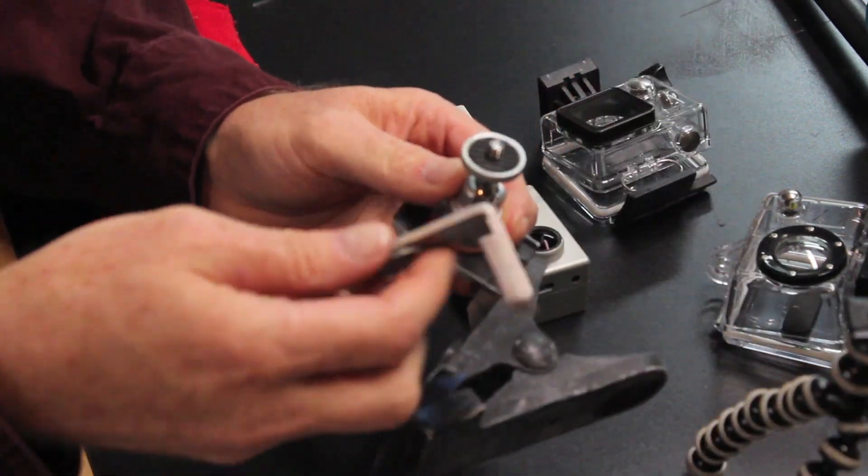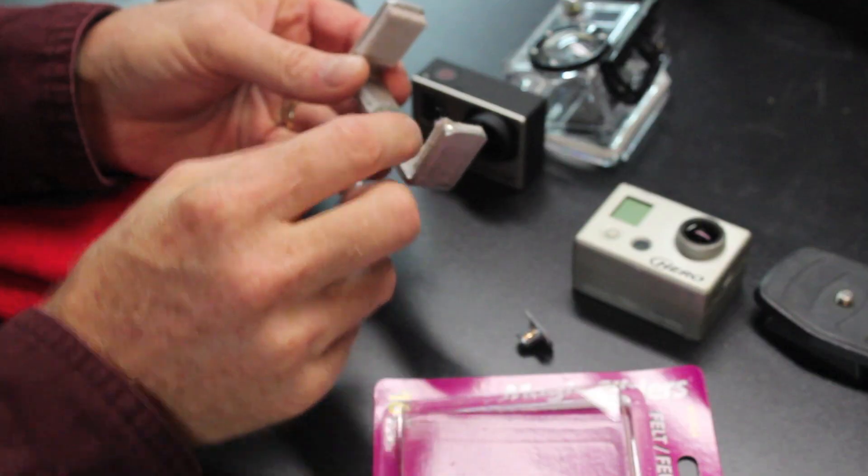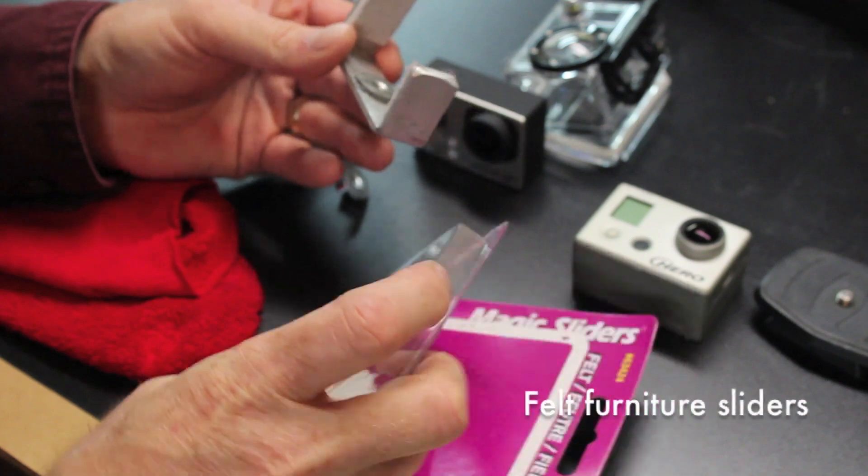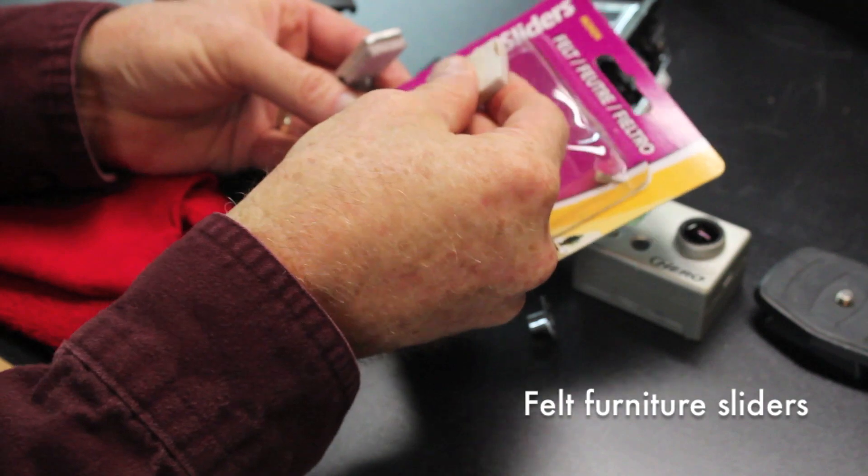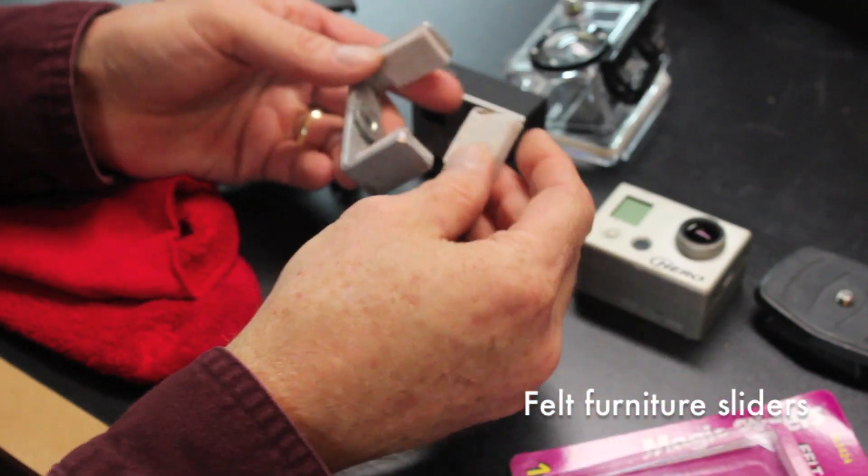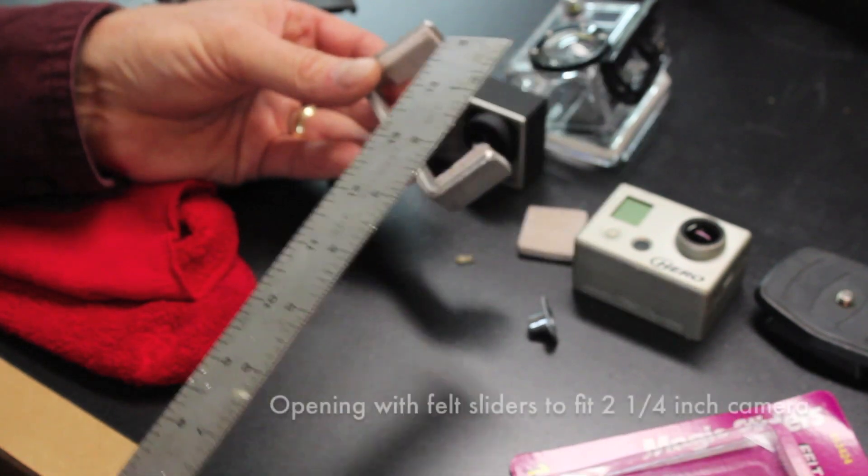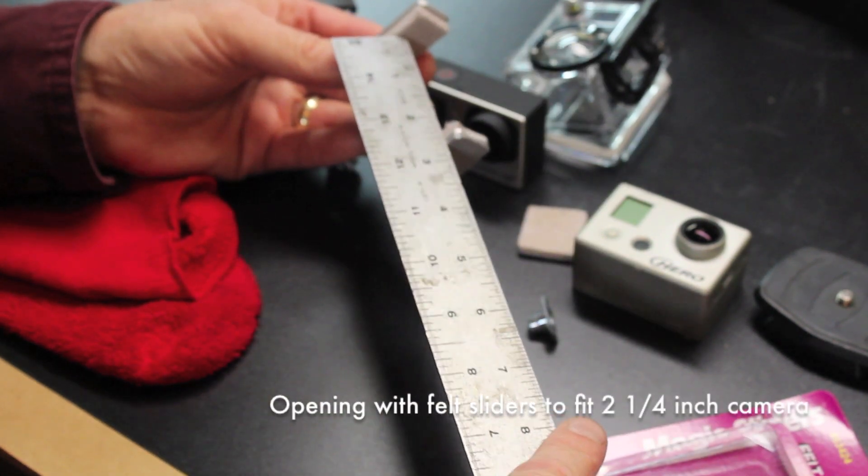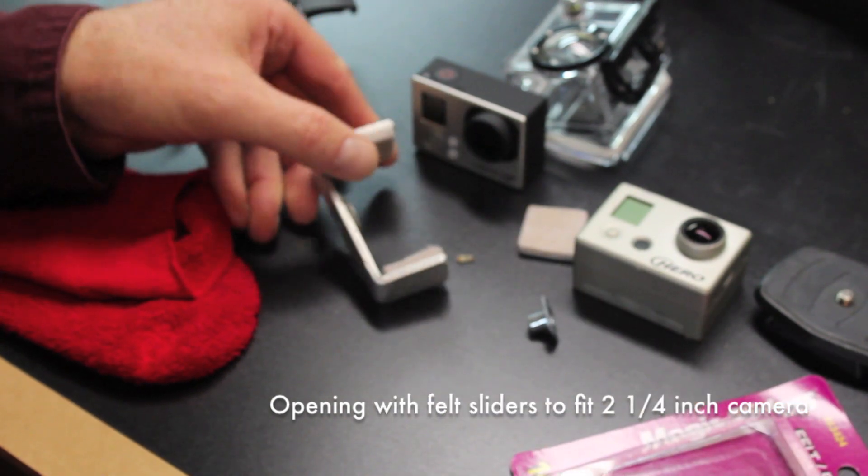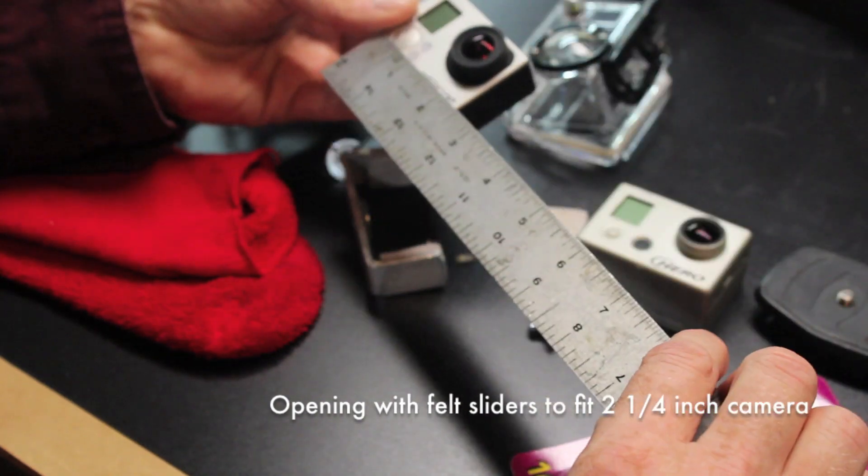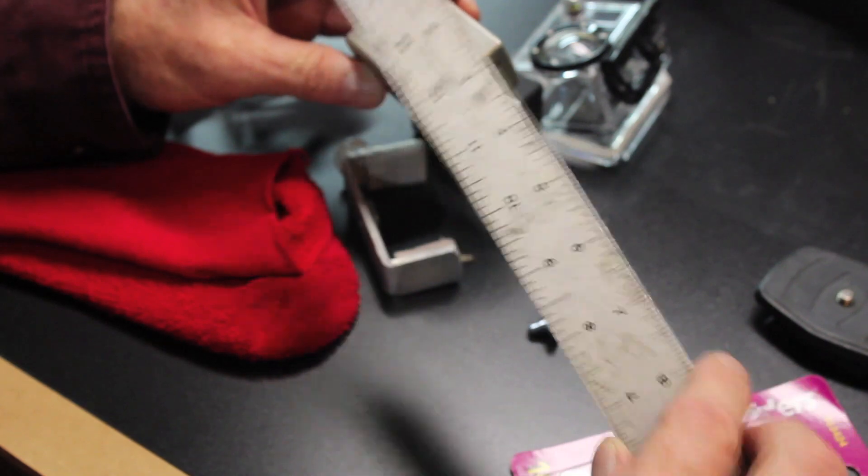Now the inside surfaces of this little C-shaped holder have these padded furniture sliders, felt furniture sliders, mounted on the inside. And that gives a nice soft friction mount to the GoPro. And the bent aluminum piece has to be spaced so that the inside measurement is just a little tighter than two and a quarter inches, which is the standard size for both the GoPro Hero 3 and the earlier Hero 2.